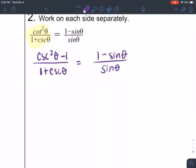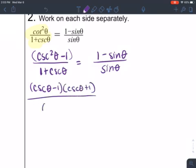The top is a difference of squares. So I can factor it as cosecant theta minus 1 times cosecant theta plus 1, all over 1